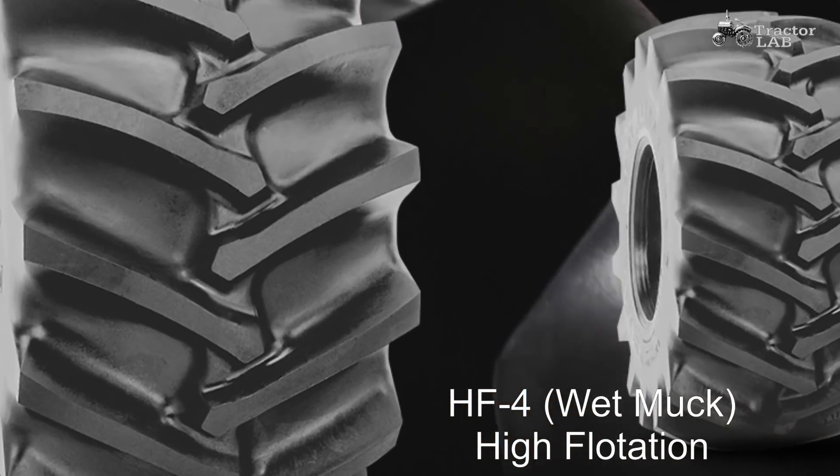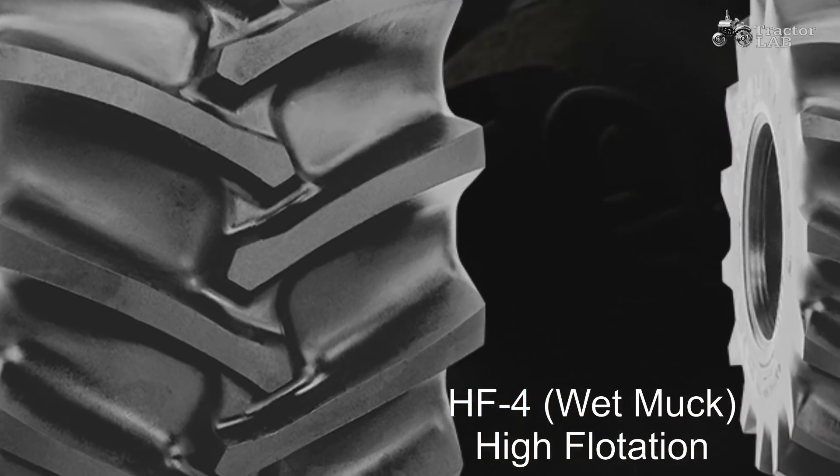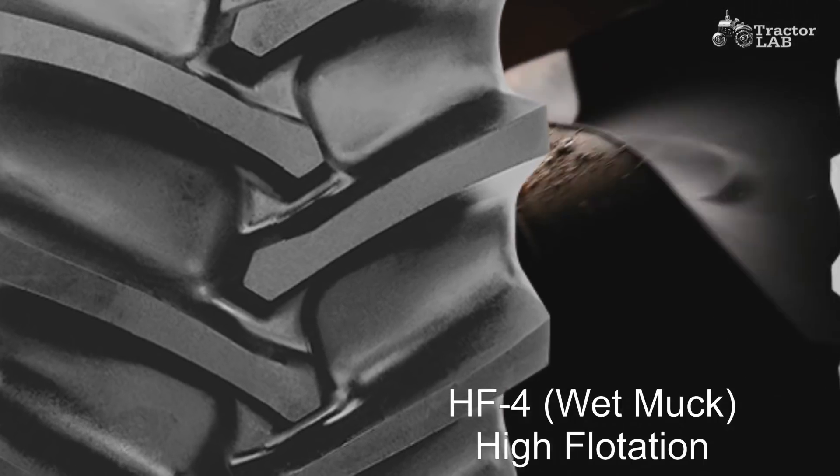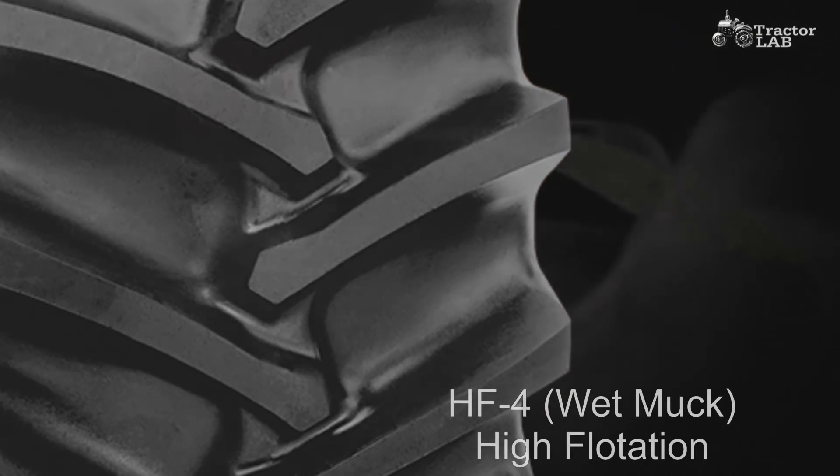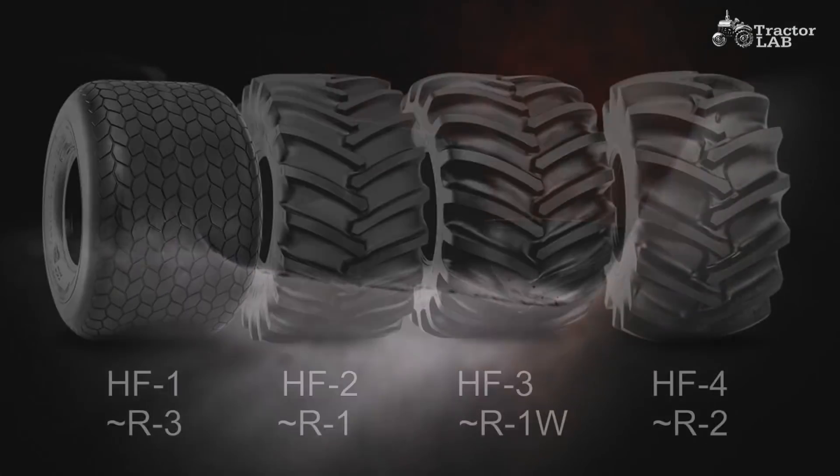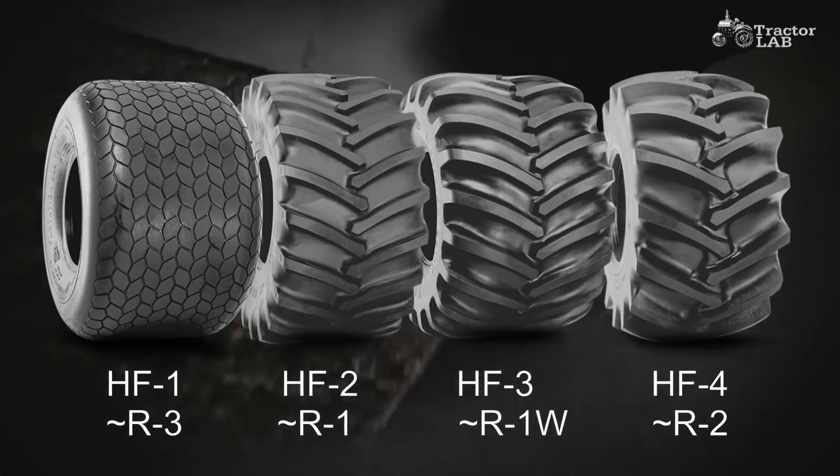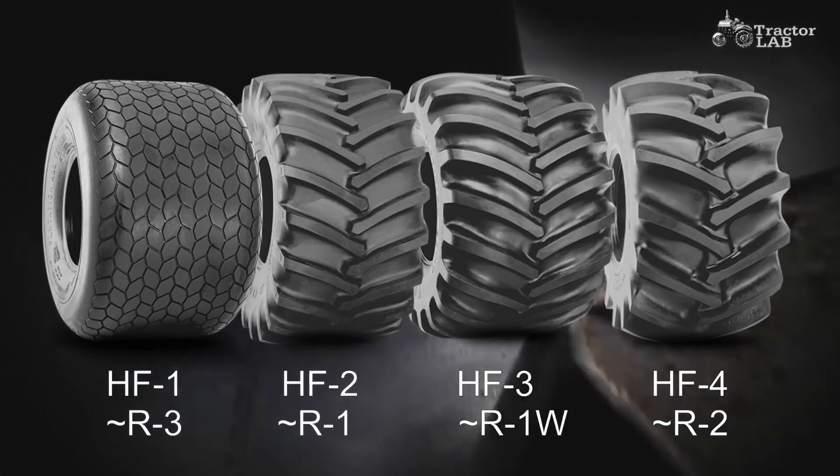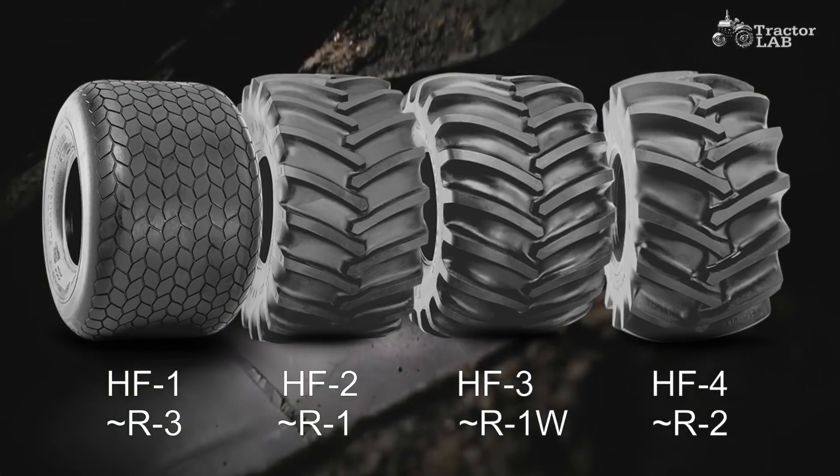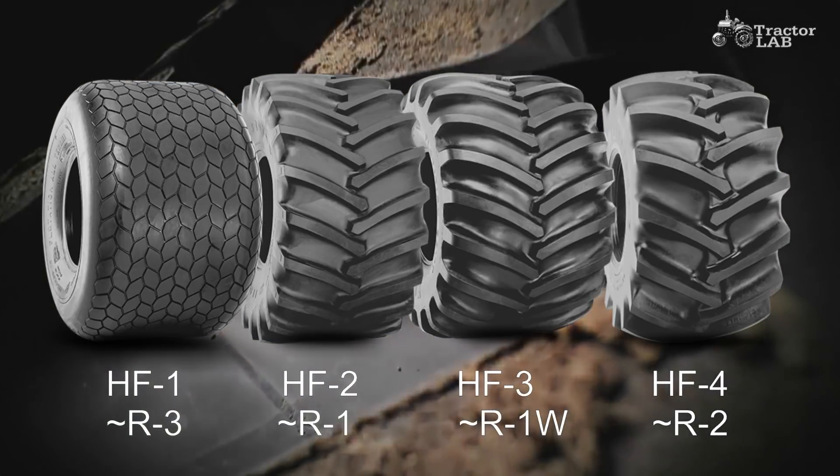The HF1 is a ribbed tread similar to an R3 tire. The HF2 type is a regular lug tread similar to an R1 tire. The HF3 type is a deep lug tread similar to an R1W tire. The HF4 is an extra deep lug tread similar to an R2 tire.